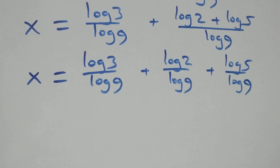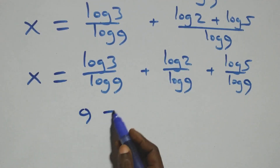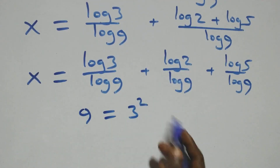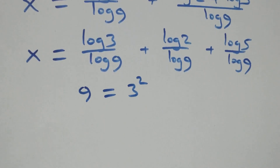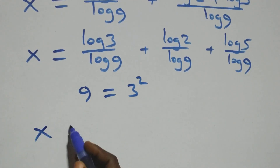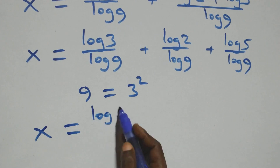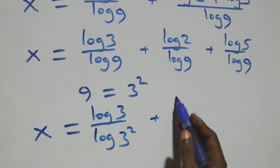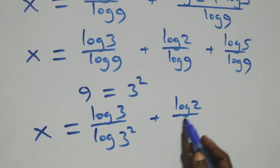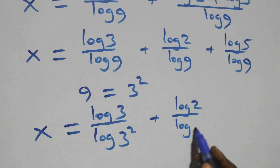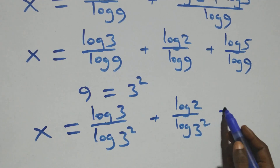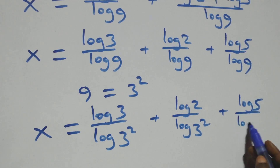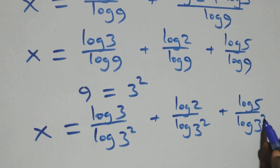Next, we can write 9 as 3 times 3, which is 3 squared. So everything becomes x equals log 3 over log(3 squared) plus log 2 over log(3 squared) plus log 5 over log(3 squared).